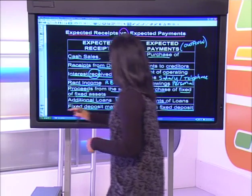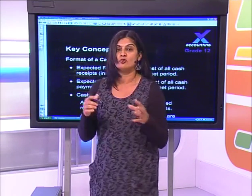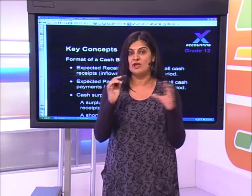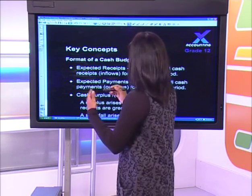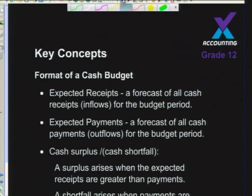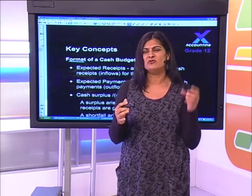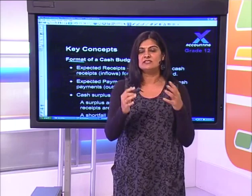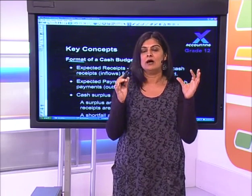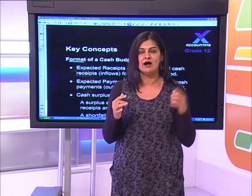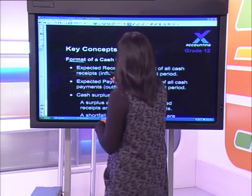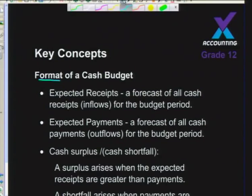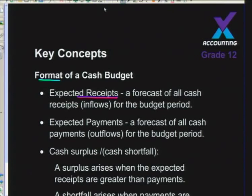The format of your cash budget - you've been doing this from Grade 10 so this is a quick recap of the main subheadings. The first subheading is receipts, which is a forecast of all cash receipts or inflows for the budget period.